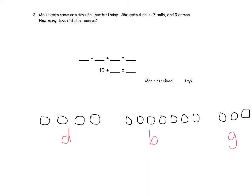I will then write the numbers in the math problem into the number sentence. So we'll put a four for dolls, seven plus seven for balls, and plus three for games. Now I will look for the two numbers that make ten. Seven and three make ten. I will place a circle around these numbers as I have made ten.